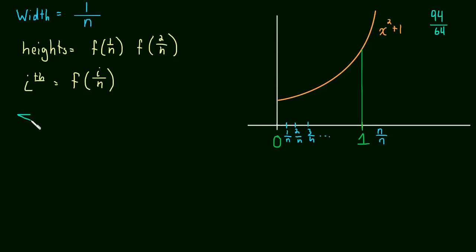So this is the sum as i goes from 1 to n now, because we have n rectangles we're summing up, of f of i over n times the width, which is 1 over n, 1 over n.